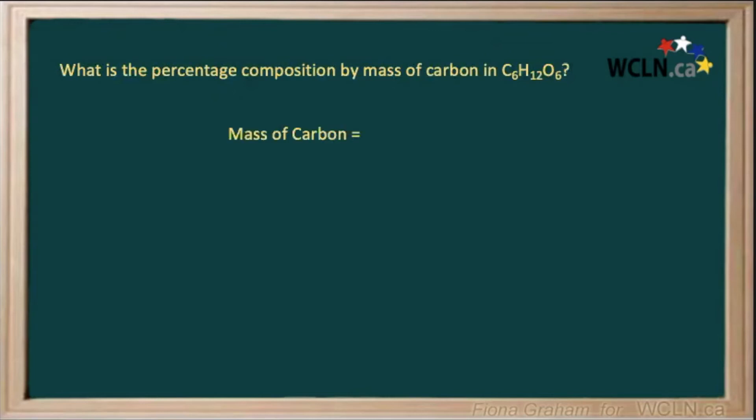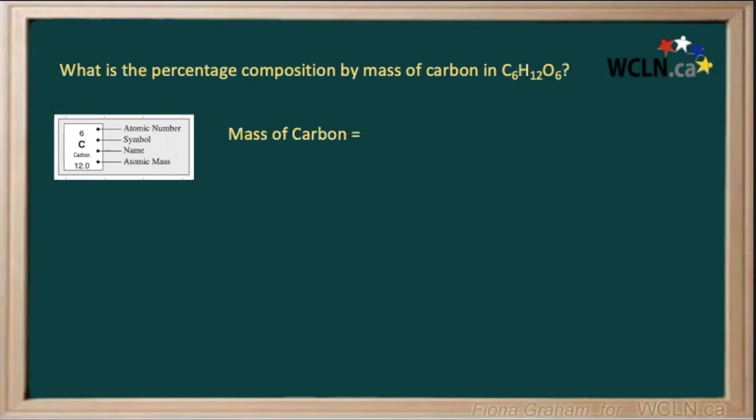So let's calculate the mass of our carbon. As we can see from our periodic table, the atomic mass of carbon is 12, and we have six atoms of carbon in our glucose. So we would multiply six by our atomic mass of 12 to get 72 atomic mass units just for our carbon.